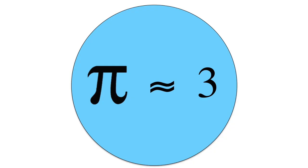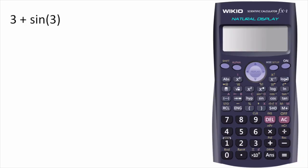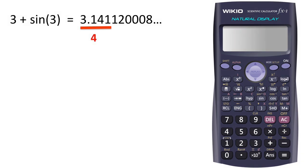We know that pi is close to 3. Use your calculator to find 3 plus sine of 3. Make sure that it's in radian mode or this won't work. The first four digits are correct.